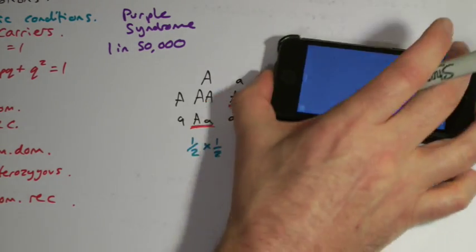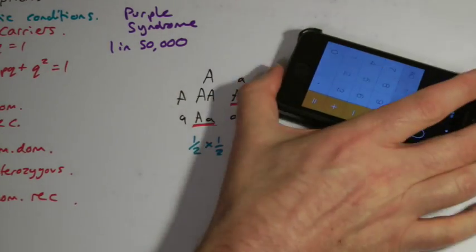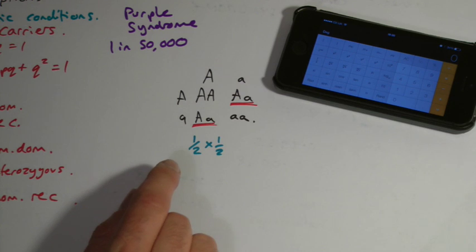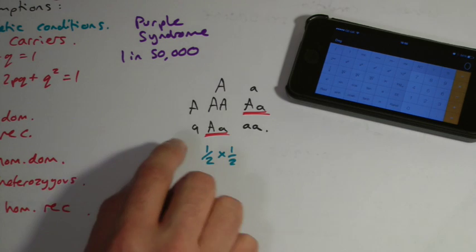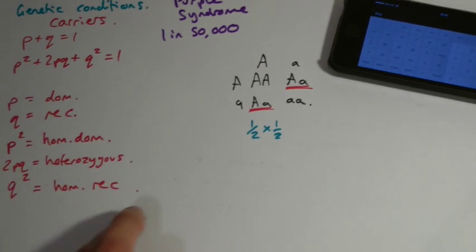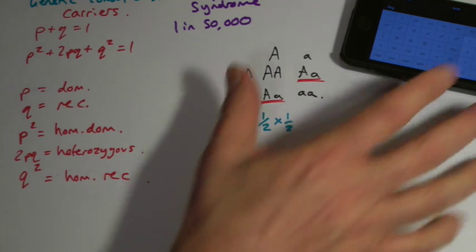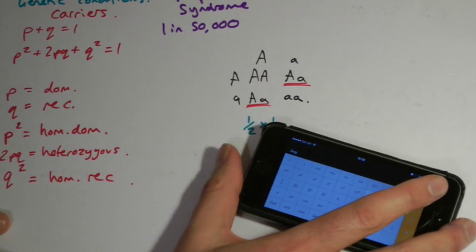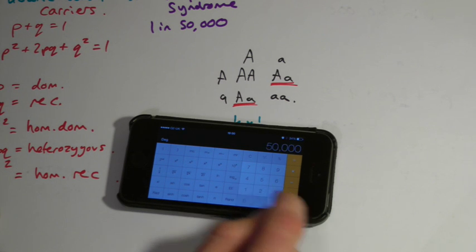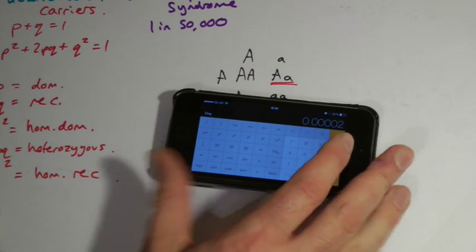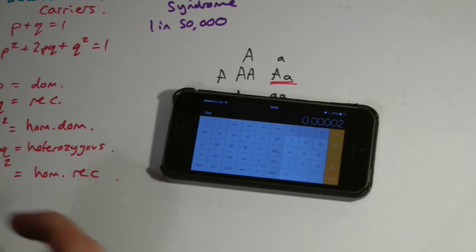So what we're going to do is try and work out what these various possibilities are. So what do we know? Well, we know that one in 50,000 people has the condition, purple syndrome. In other words, we know one in 50,000 people is homozygous recessive. But one in 50,000, we don't want that as a number here, we want it as a percentage. So how do we do it? It's dead easy. One divided by 50,000. And you see my answer comes out as this decimalized 0.0002. So that's q².